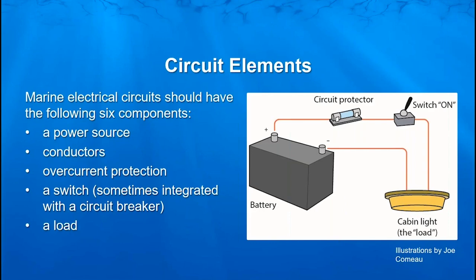The cabin light — the load — is the resistance in the circuit. It's our component that the circuit is there to provide power to. And at the end, we've got to have a return path to ground. If we do not have that return path to ground, nothing is going to work. In order for current to flow, you have to have a complete circuit.